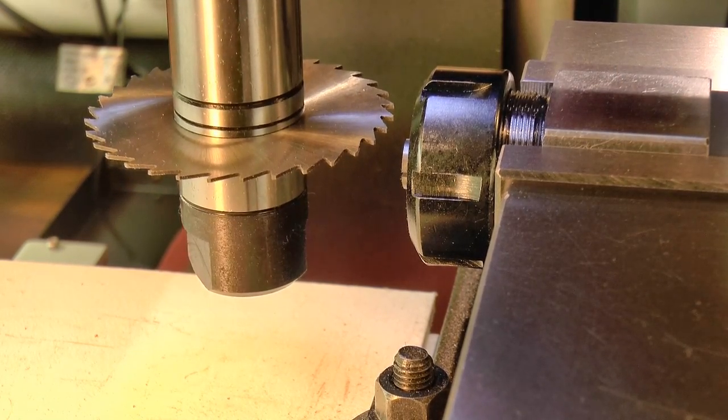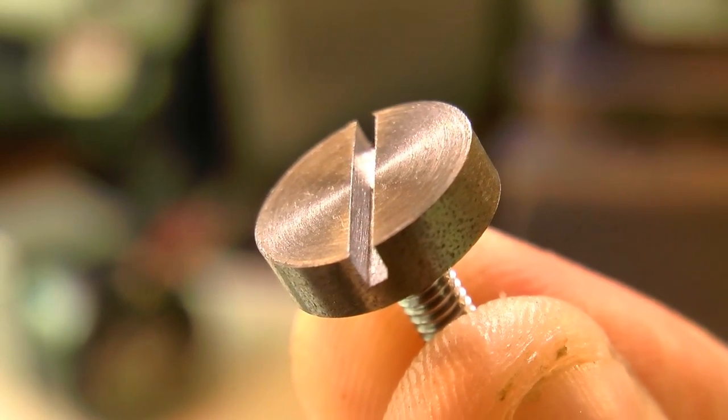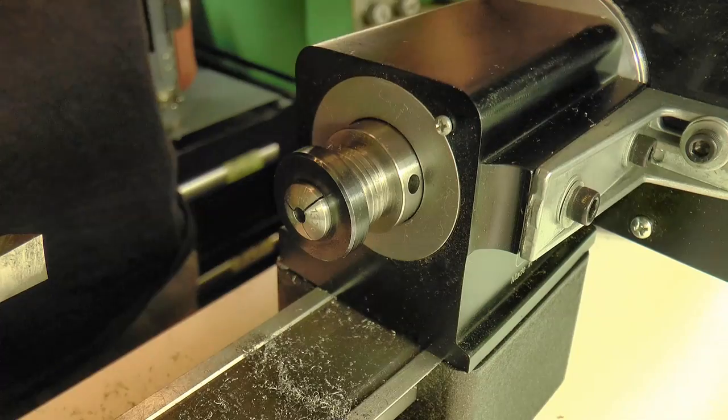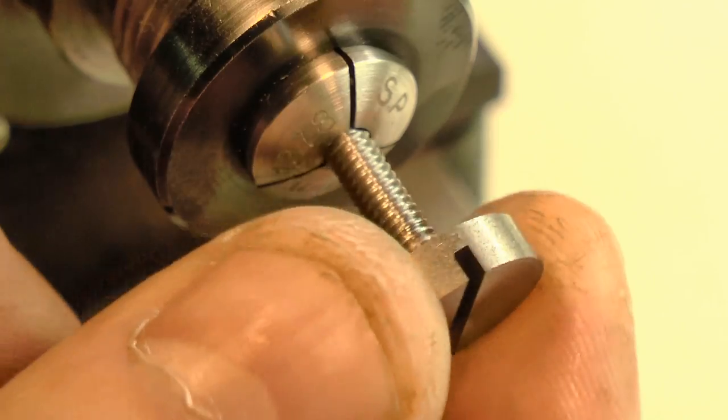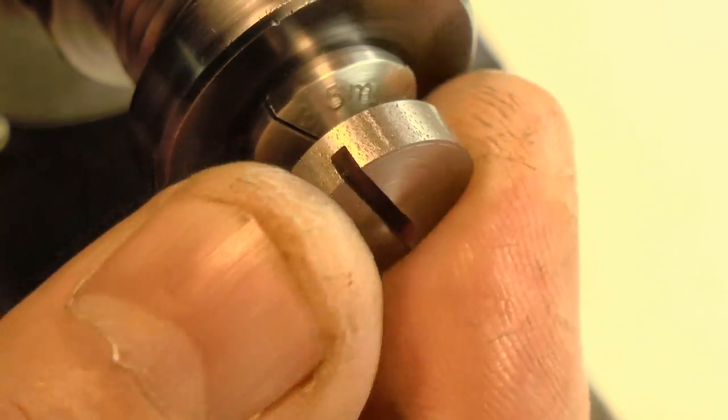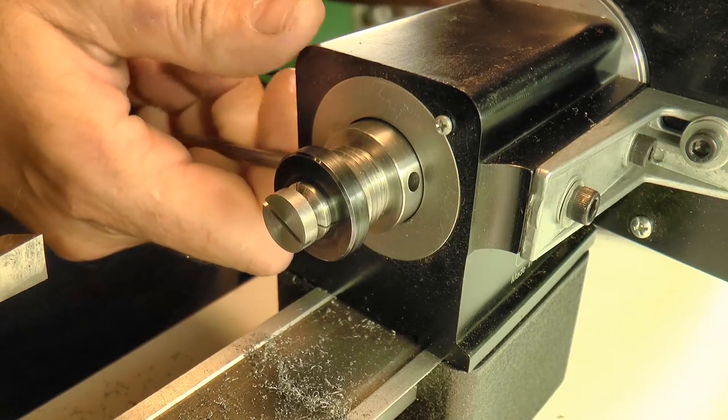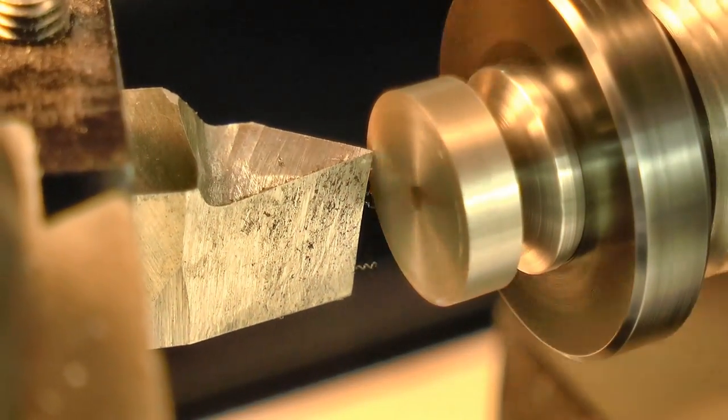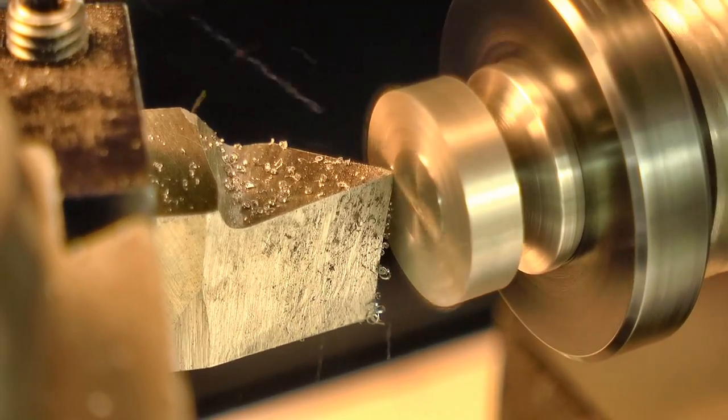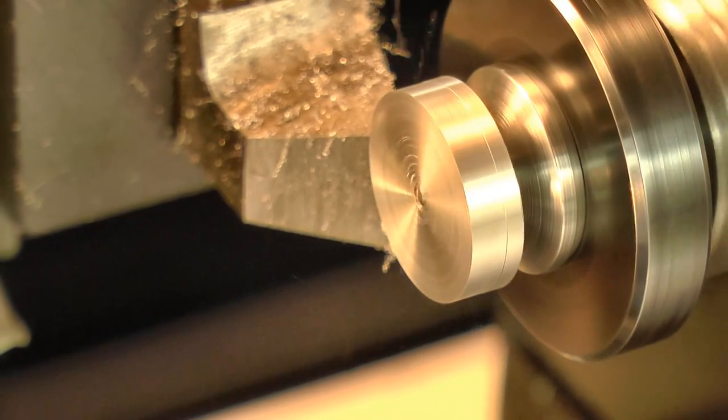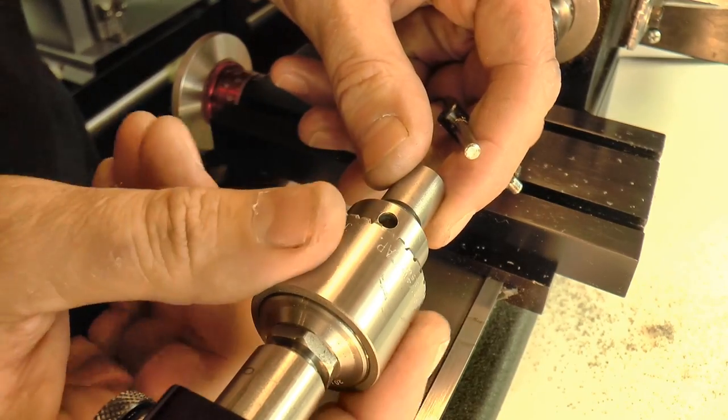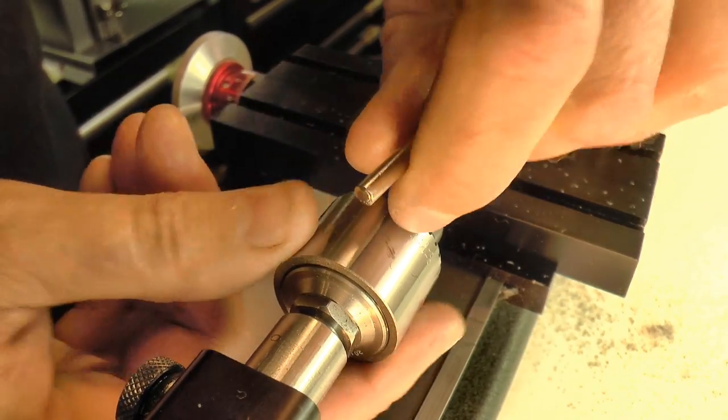At this point, the screw form is basically complete, it just needs to be brought to final dimension, and then polished. So it's back to the small lathe for the final operations. Off camera, I turned up this little filing guide to help me keep the edges of the screws square during sanding and polishing.